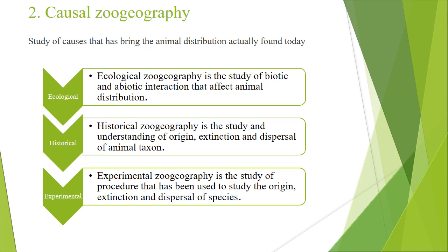Next is causal zoogeography. As the word 'causal' relates to causes, in this division we find out the causes of the present distribution of animals. In causal zoogeography we study the causes that bring about the animal distribution found today. There are three branches of causal zoogeography: ecological zoogeography, historical zoogeography, and experimental zoogeography.